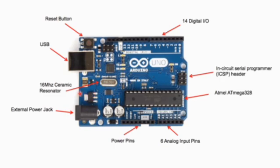Next, here you can see the 16 megahertz ceramic resonator, which is also called an oscillator. Your Arduino has an operating frequency of 16 megahertz at which it oscillates and works. So here an oscillator — also called a resonator — is fitted, which works at 16 megahertz.